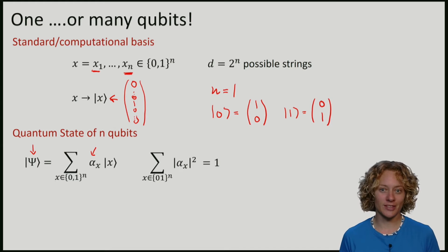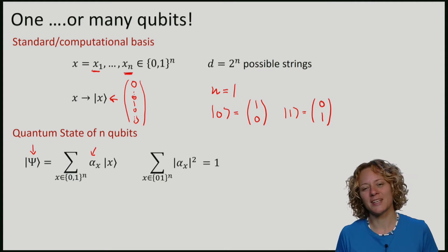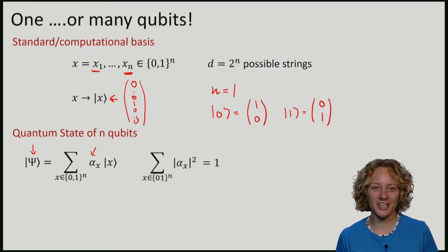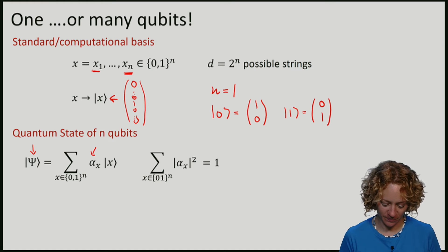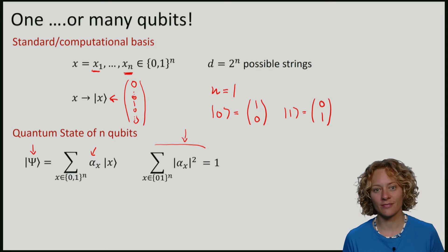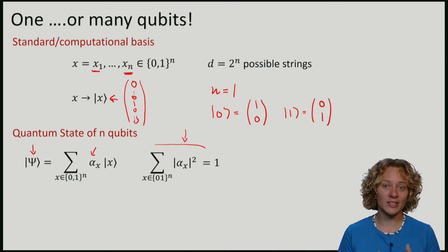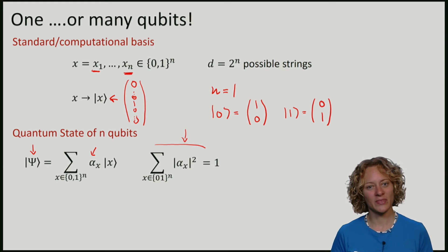These alphas are again complex numbers, and we will again make the demand that the vector has length 1. This means that the inner product is 1, or equivalently that the sum of the amplitudes alpha squared gives us 1.